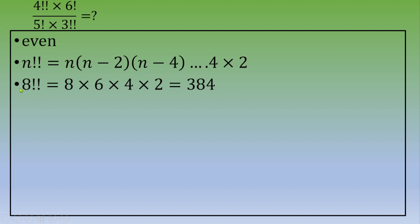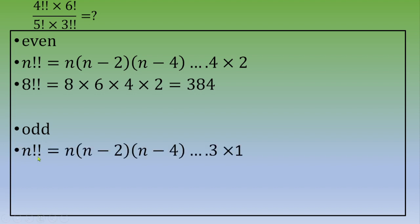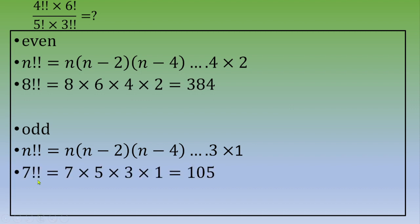For example, 8 double factorial equals 8 times 6 times 4 times 2. The second case is when n is an odd number. To illustrate, 7 double factorial equals 7 times 5 times 3 times 1, which equals 105.